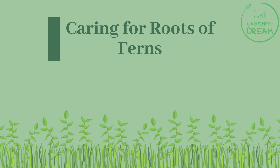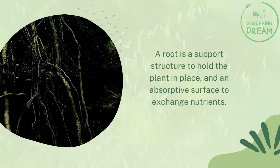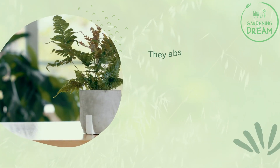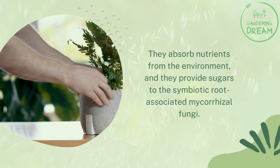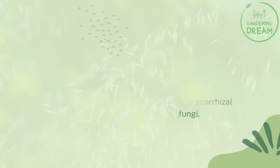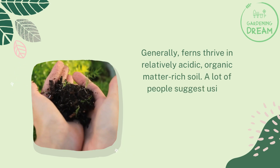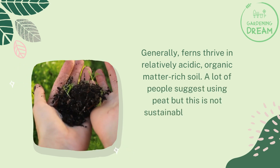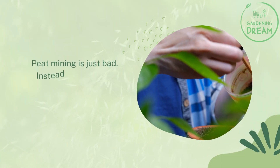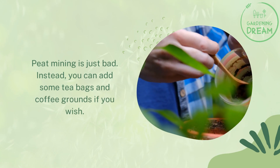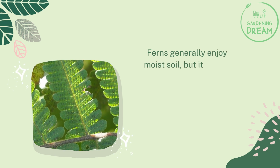A root is a support structure to hold the plant in place and an absorptive surface to exchange nutrients — absorbing nutrients from the environment and providing sugars to the symbiotic mycorrhizal fungi. Generally, ferns thrive in relatively acidic, organic matter-rich soil. Many people suggest using peat, but this is not sustainable and should be discouraged — peat mining is just bad.